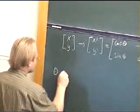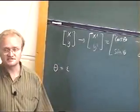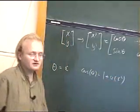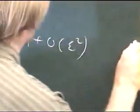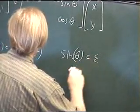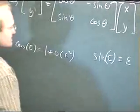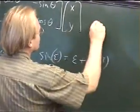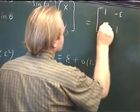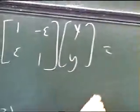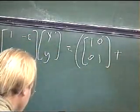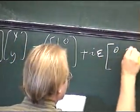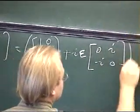So let me put theta equal to epsilon, infinitesimal. The cosine of theta would be 1 plus order epsilon squared — just Taylor expansion. Sin theta would be equal to epsilon plus order epsilon cubed. So what would this matrix turn into? This would be the matrix (1, -epsilon; epsilon, 1) acting on (x, y), which can be written as 1 plus i epsilon times the matrix (0, i; -i, 0) acting on (x, y).